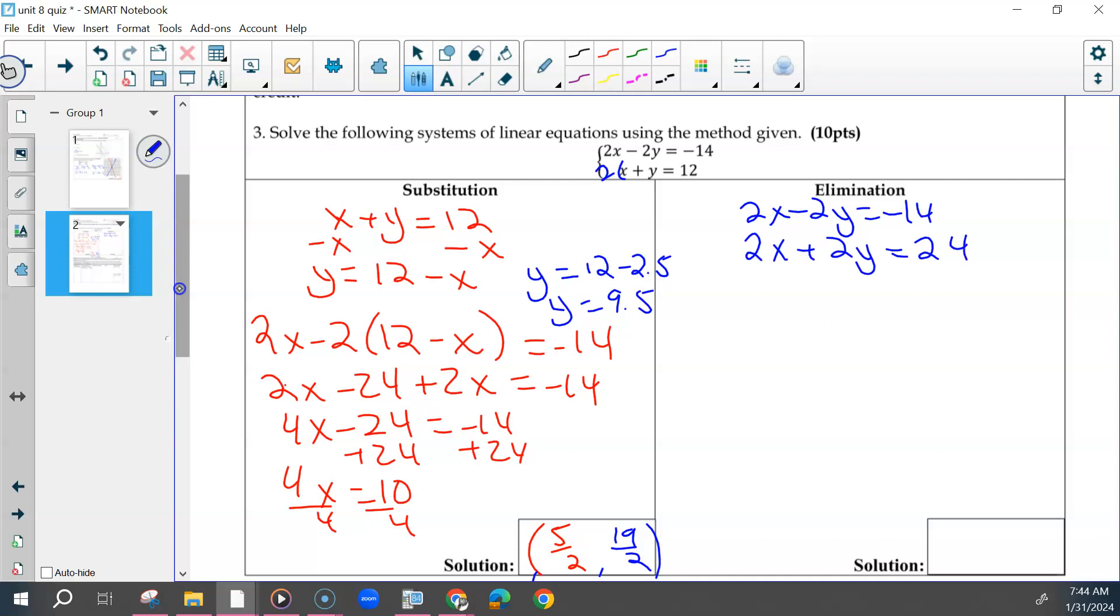Some issues I saw with this is we weren't multiplying the 2 to the 12. So make sure you're distributing to everything. Or when we brought down this y, we changed the sign. So be careful there. Don't do that. And then you had a choice. So if I wanted to eliminate my x's here, I would subtract. Negative 2 minus 2y would be negative 4y. Negative 14 minus 24 would be negative 38. Divide both sides by negative 4.